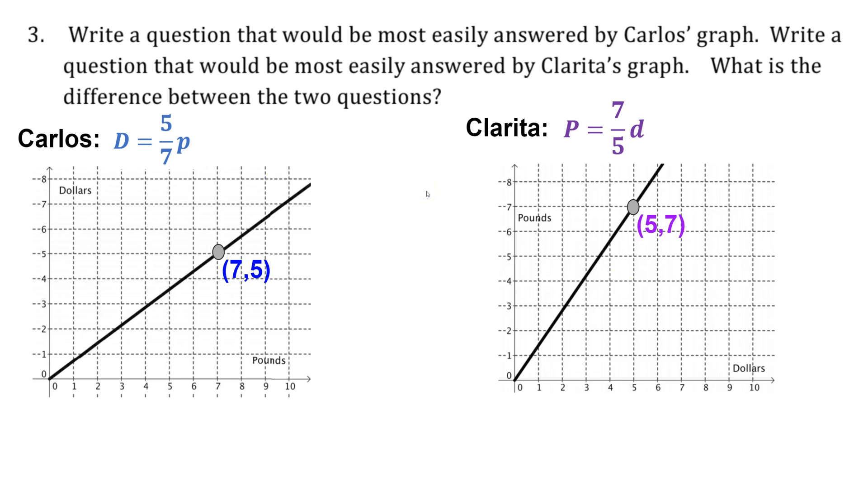Question three asks us to write a question that would most easily be answered by Carlos's graph. So the questions that could be answered by Carlos's graph are questions of the form: How many dollars will it cost to buy P pounds of dog food? Because the dollars depend on the pounds in Carlos's scenario.